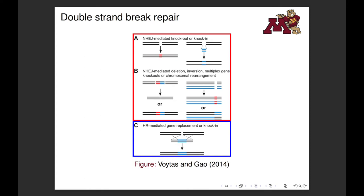If DNA is introduced into the cell at the same time as the site-specific nuclease, sometimes this DNA will be inserted into the break site. This is referred to as non-homologous end joining when the introduced DNA does not share sequence similarity with the breakpoint, also shown in Part A, and homologous recombination mediated repair when the introduced DNA does share similarity with the breakpoint, as shown in Part C of the diagram.